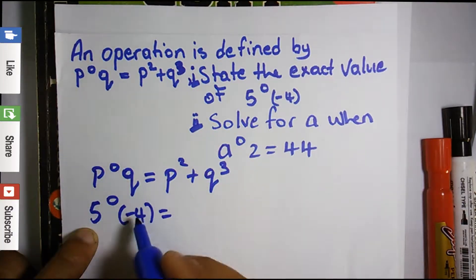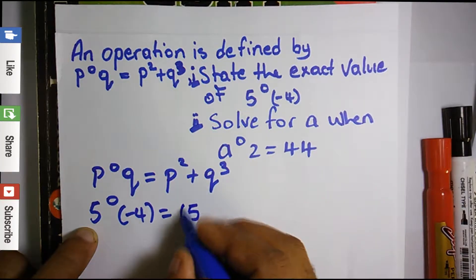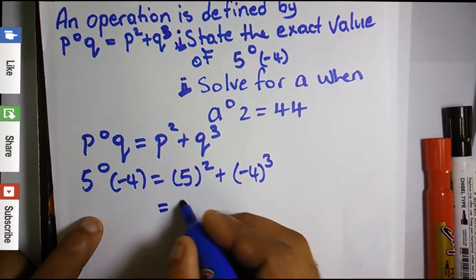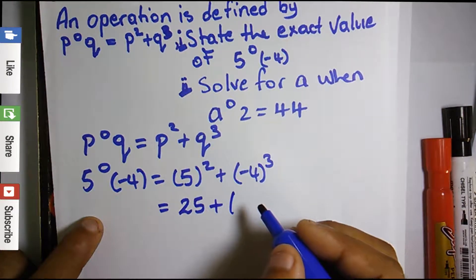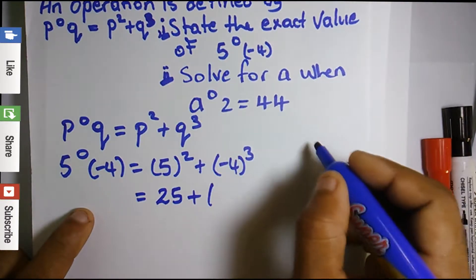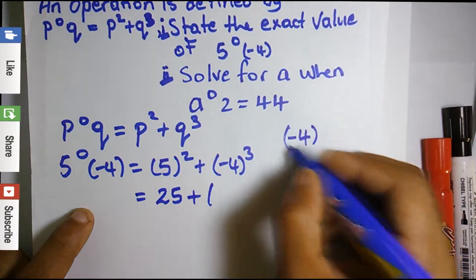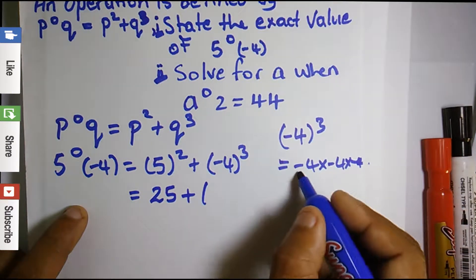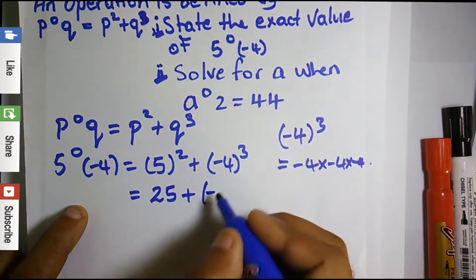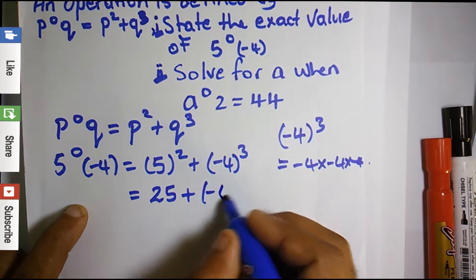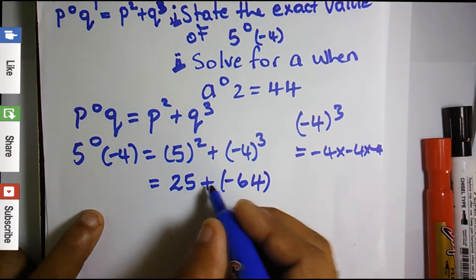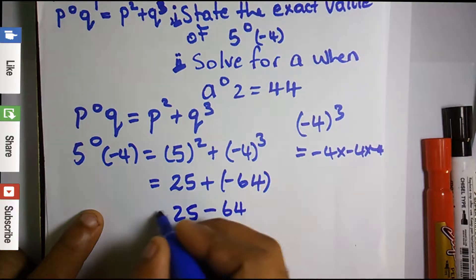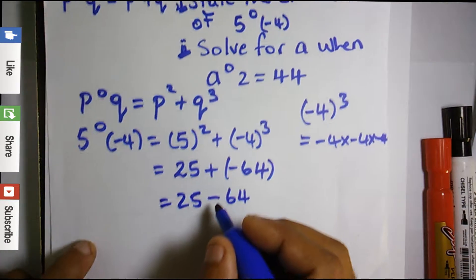P is 5 and Q is −4, so we have 5 squared plus (−4) cubed. 5 squared is 25. Now for (−4) cubed: that's negative four multiplied by negative four multiplied by negative four. Negative times negative is positive, times negative is negative. Four times four is sixteen, and sixteen times four is sixty-four, so (−4)³ = −64.